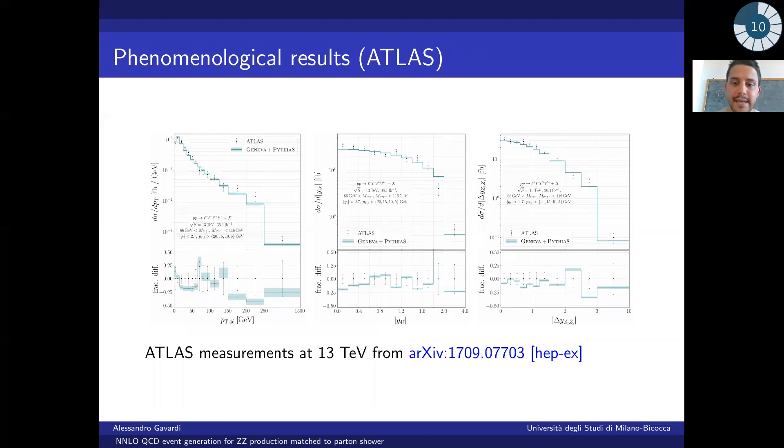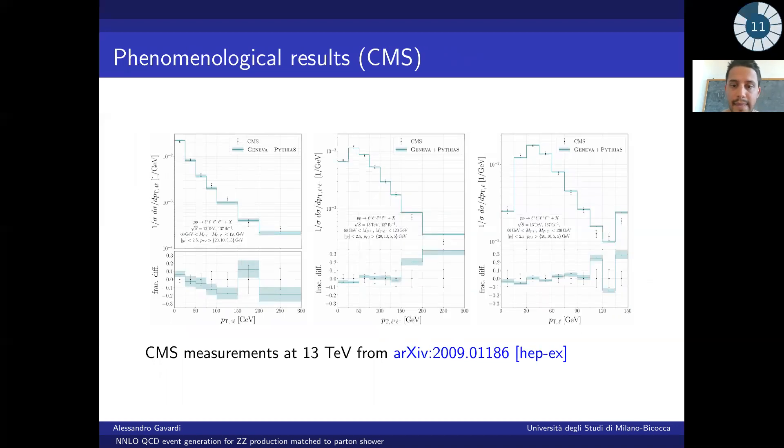These finally are some comparisons with the data. These data come from the ATLAS experiment, while these ones come from the CMS experiment, and we can see overall a quite good agreement between our theoretical predictions and data.